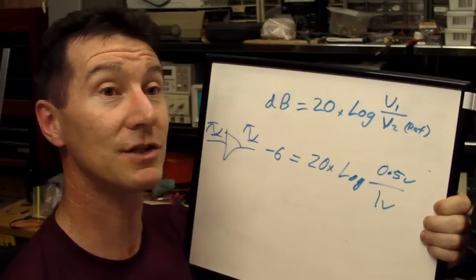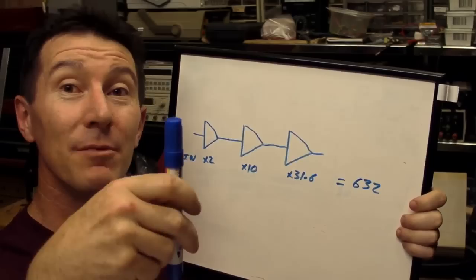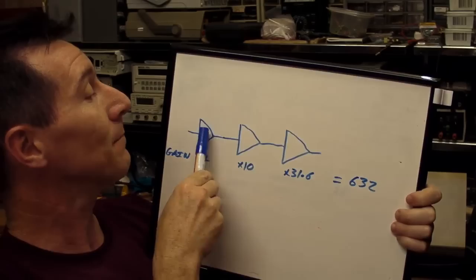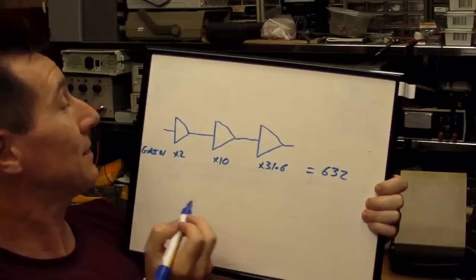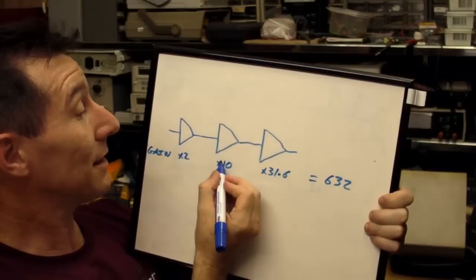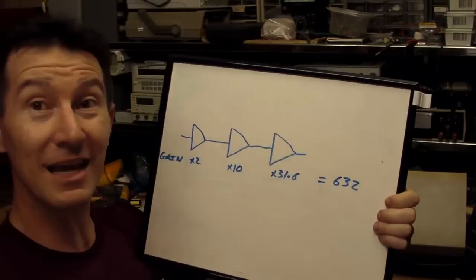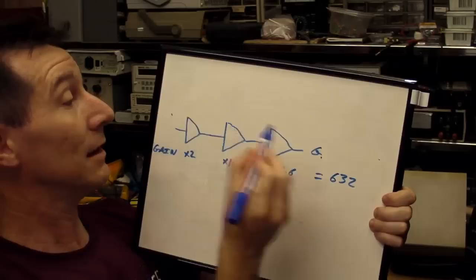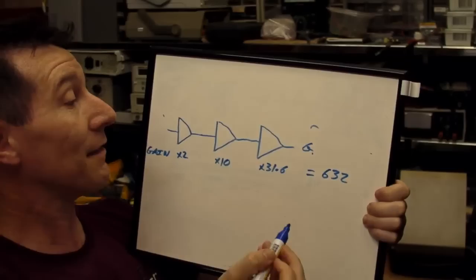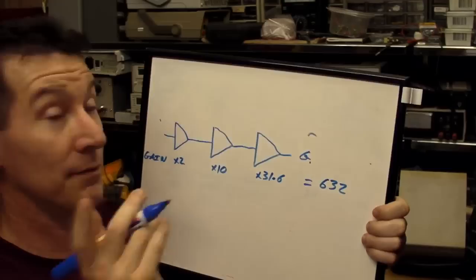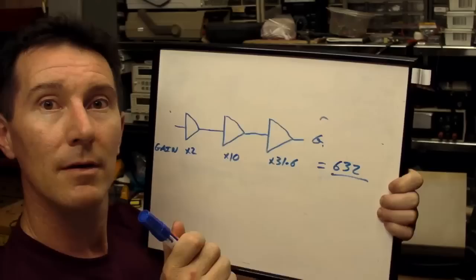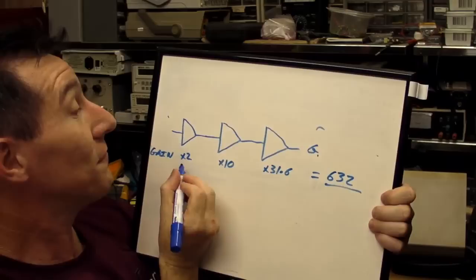Okay, let's take a look at an example where dBs start becoming useful. Let's say that we've got a system here with three amplifiers in series. Three amplifiers cascaded, and the first one has a gain of times 2, the next one has a gain of times 10, and the next one has a gain of times 31.6. Now, if you want to work out what's the total gain from input to output, you've got to multiply these together. And, well, that's not too hard with these numbers, but they could be weird. They could be harder numbers. And, you've got to multiply them. You get a total gain of 632.